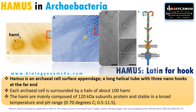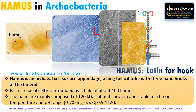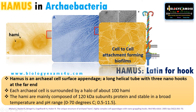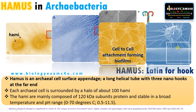Because of its resistance to a wide range of environments, the function of hamus is cell-to-cell attachment, forming biofilm or communities. As you see here, this is also an electron microscopic image showing individual archaebacterial cells connected by hami. So one function is cell-to-cell attachment forming biofilms.